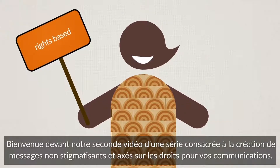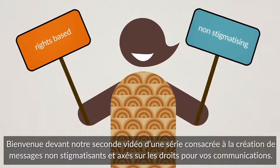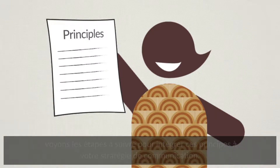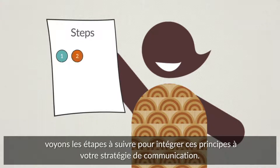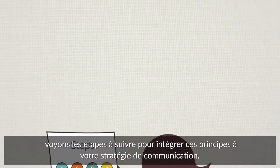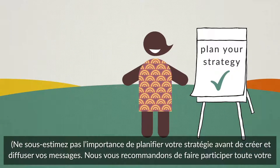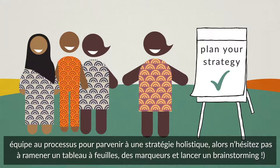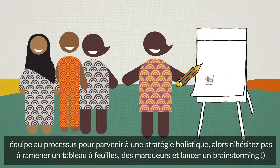Welcome to the second film in our series on rights-based and non-stigmatising messaging. Now we have established the principles behind your communications for advocacy, let's go over the necessary steps to create a communication strategy to put these principles into practice. Planning your strategy before creating and disseminating messages about your cause is important. We recommend involving your whole team to create a holistic communication strategy, so grab a flipchart and some markers and get brainstorming.